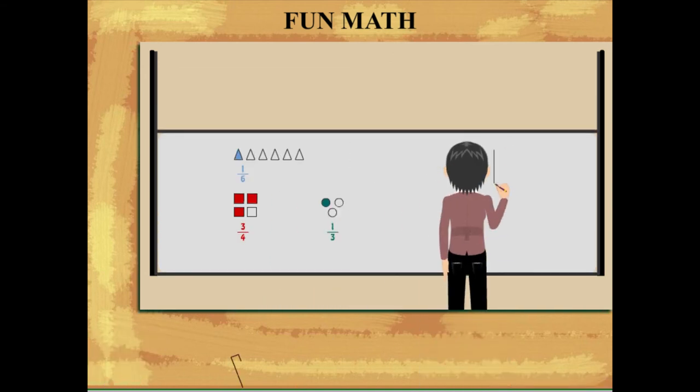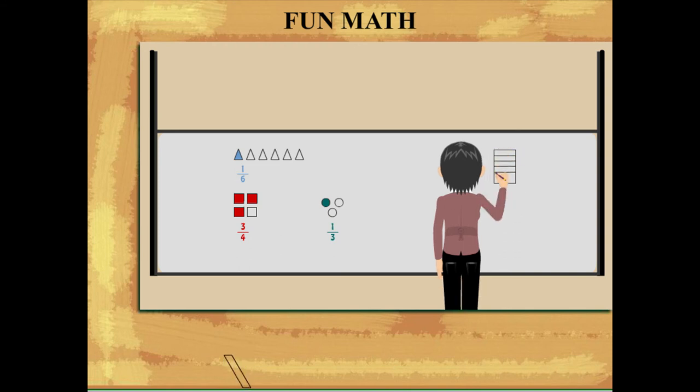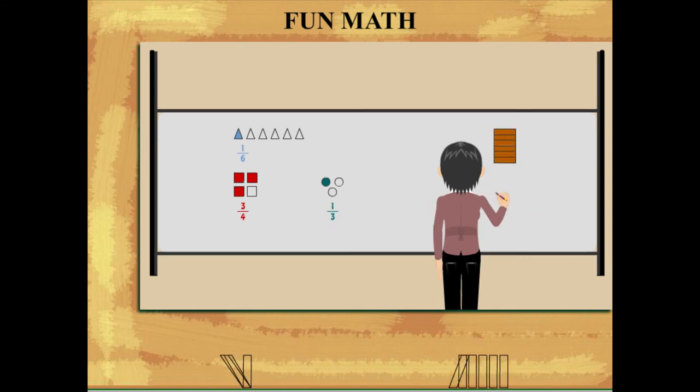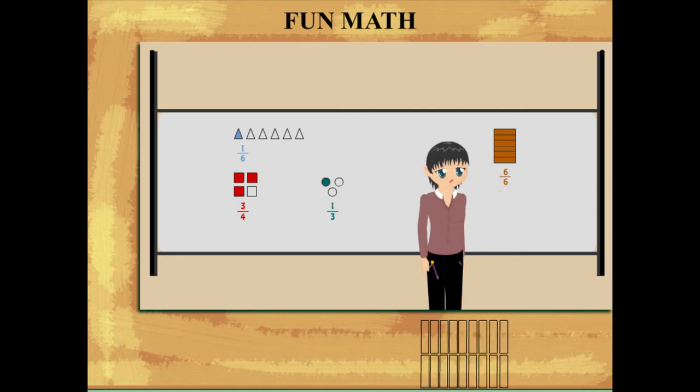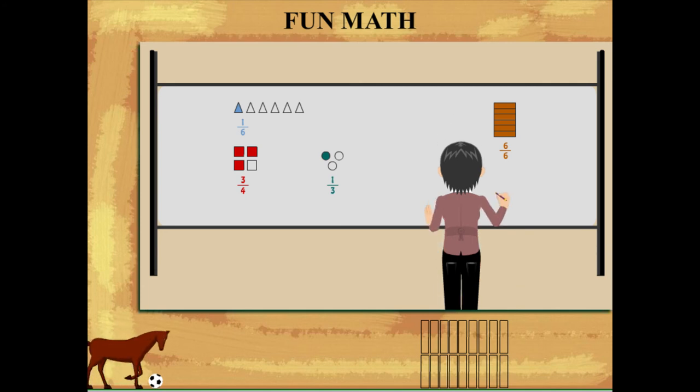On the far end of the board she draws a rectangle with six parts. She shades all the parts and the fraction becomes six upon six, or it means the whole rectangle.